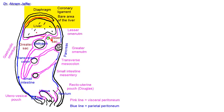Also note that the viscera are not located inside the peritoneal cavity — they are almost completely covered by peritoneum, but they are not inside it. The peritoneal cavity, whether the greater sac or the lesser sac, is a thin potential space and does not contain the viscera, but the viscera are almost completely covered by peritoneum.